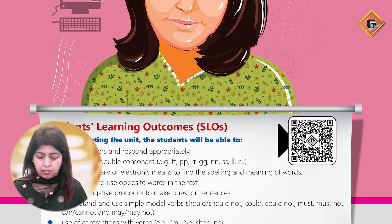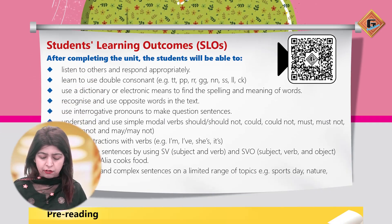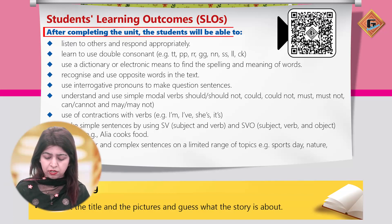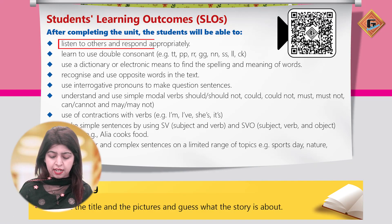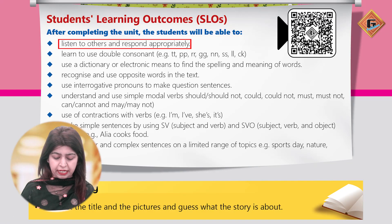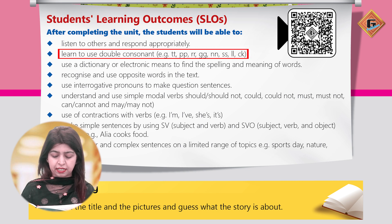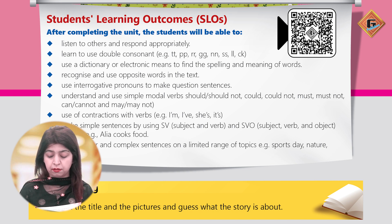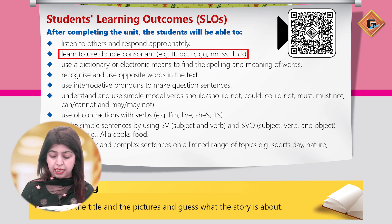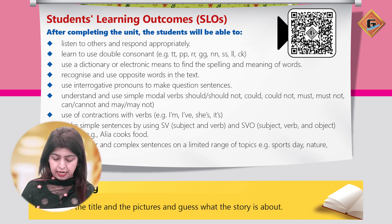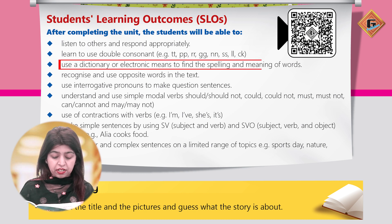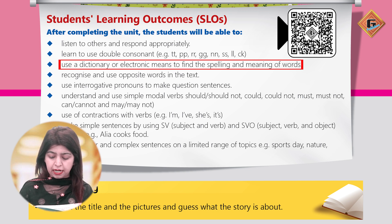Ab dekhte hain, sab se pehle hum apna learning outcome. Students' learning outcomes: after completing the unit, the students will be able to listen to others and respond appropriately, learn to use double consonants — such as double T, double P, double R, double G, double N, double S, double L — and use a dictionary or electronic means to find the spelling and meaning of words.